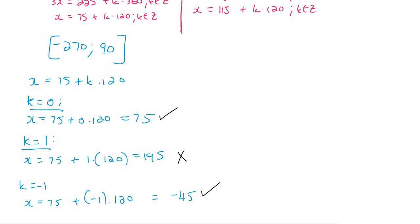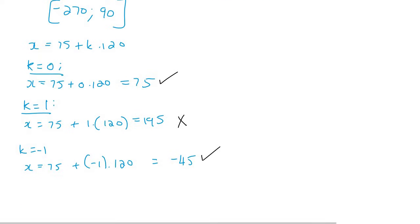And then we can maybe try k equals to 2. I mean minus 2, sorry. And so that would be x equals to 75 plus negative 2 times 120, and let's see what that gives us. Yes, that's also a good one. Minus 165. So that works because it's in that interval.